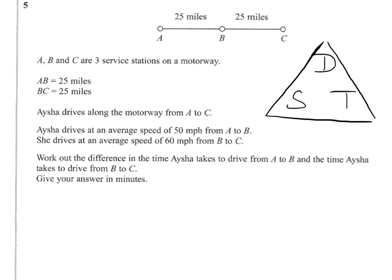So we've been told that A, B and C are service stations on the motorway, and A and B are 25 miles apart, as are B and C. Ayesha drives along the motorway from A to C. She drives at 50 miles an hour from A to B and then 60 miles an hour from B to C. We've got to work out the difference in time she took to drive from A to B and then from B to C, giving our answer in minutes.